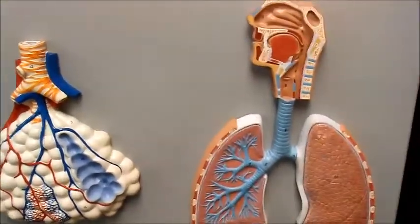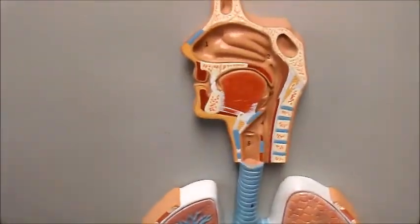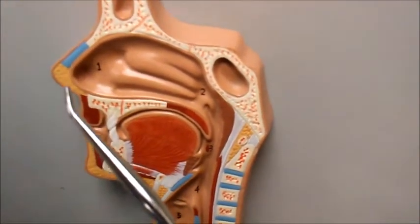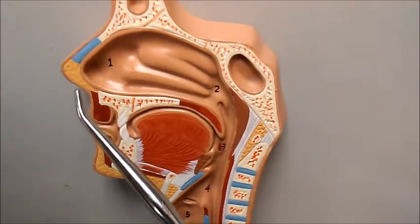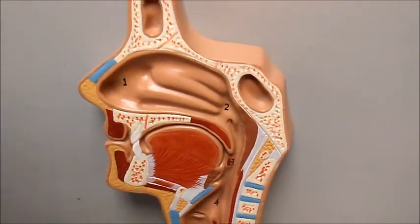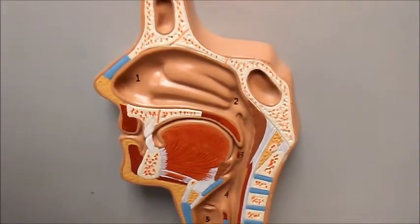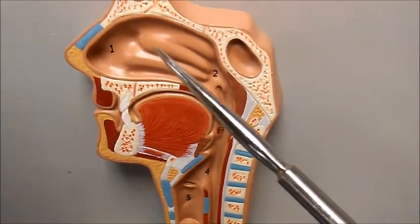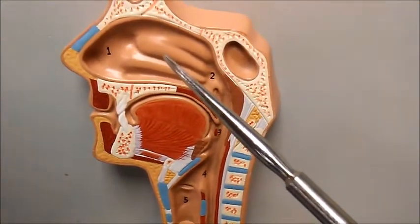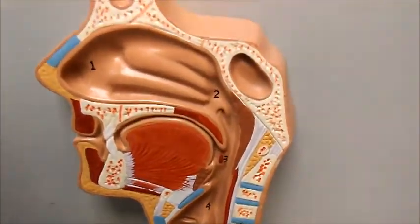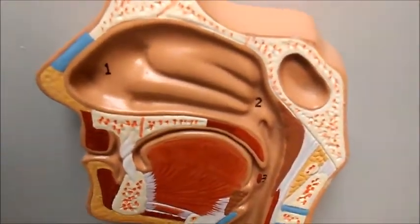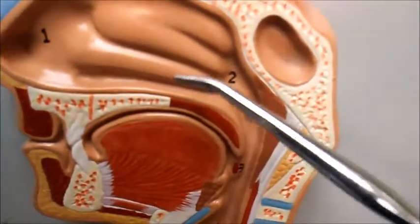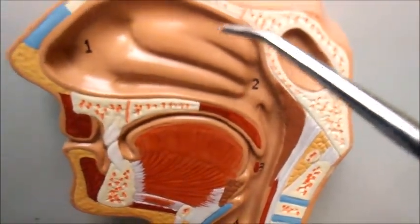When we take a look at the anatomy of the system we are going to start with the nose. The opening to the outside in the nose are known as the external nares or nostrils, and the air from there will go into the nasal cavity or the nasal passages. In the nasal cavity and the nasal passages we see three bones known as the turbinate bones. These are the inferior, the middle, and the superior conchae.